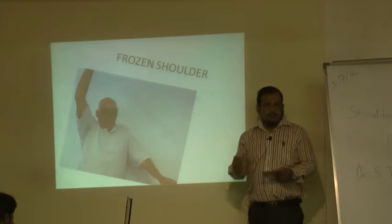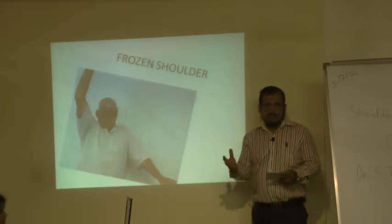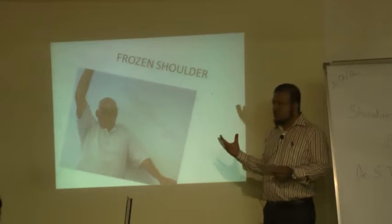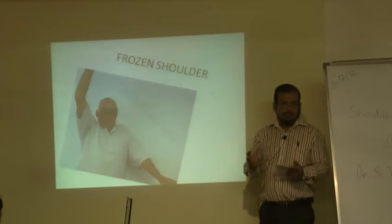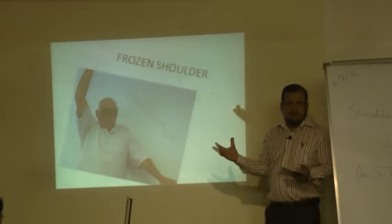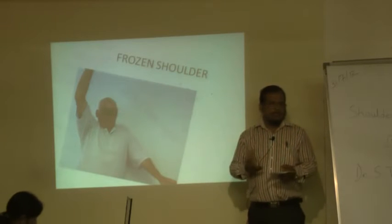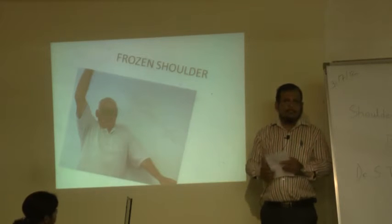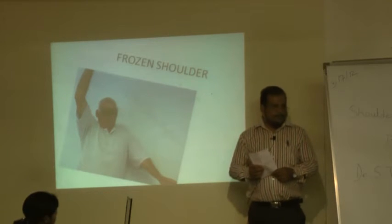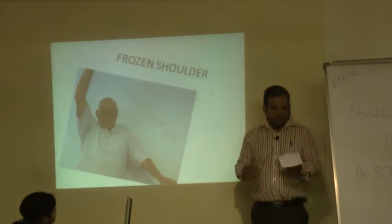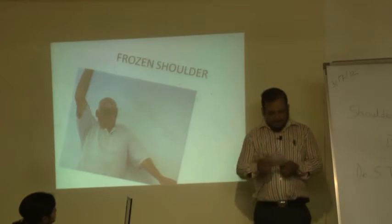What is frozen shoulder? The other name in the medical field is adhesive capsulitis. All joints have an internal capsule of fibrous membrane. This capsule of the shoulder, for unknown reasons — science really does not know why — gets contracted and stiff. They say it is because of some autoimmune reaction, and as the reaction gradually weans off, the frozen shoulder becomes less severe.